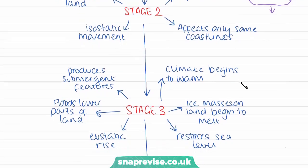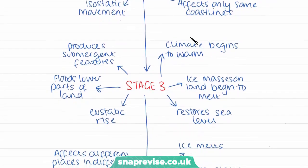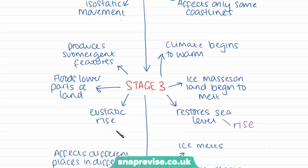In stage three, the climate begins to warm again, causing ice masses such as glaciers to begin to melt. This meltwater feeds back into the sea, restoring and raising sea levels. Because this is a rise in the level of the sea itself, it is called eustatic rise. This causes flooding of lower parts of the land as sea level rises and produces submergent features, which we're going to look at later — these are features where the land is submerged under water.